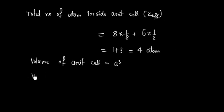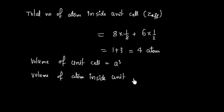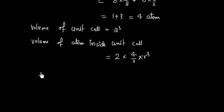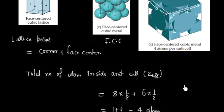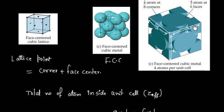Now we can find the volume of atoms inside the unit cell. We have 4 effective atoms and the volume of one atom is (4/3)πr³. Now we need one relation between A, the edge length, and r, the radius of the atom.